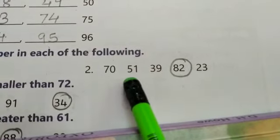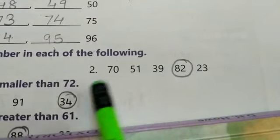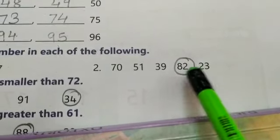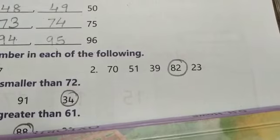75, 51, 39, 82, 23. So in this 82 is biggest. So we will circle 82. Thank you.